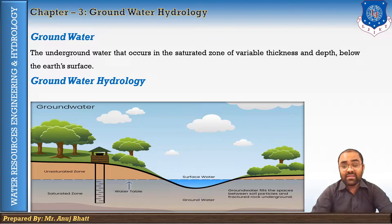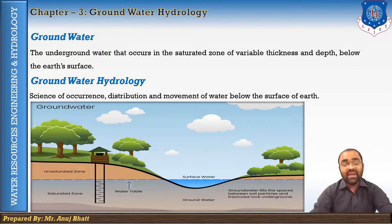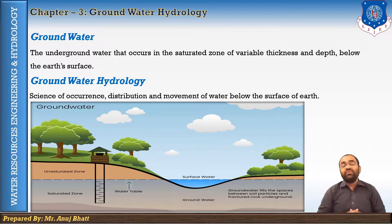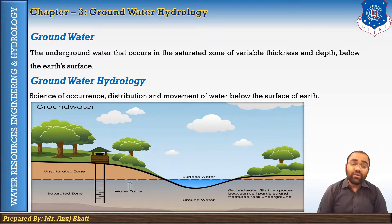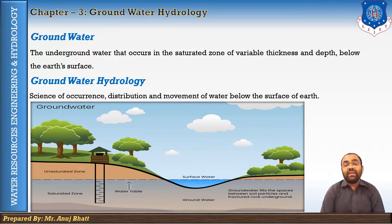Groundwater hydrology is the science of occurrence, distribution, and movement of water below the surface of the earth. The largest available source of fresh water lies underground. The total underground water potential is estimated at about one third of the capacity of the ocean, which represents a large volume to store water. The study of subsurface flow is important because above 30 percent of the world's fresh water exists in the form of groundwater.